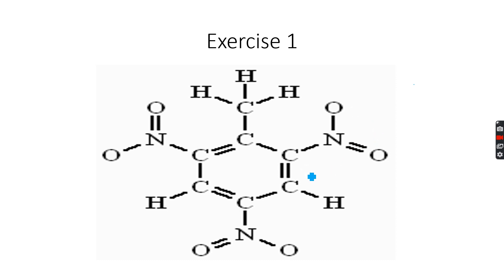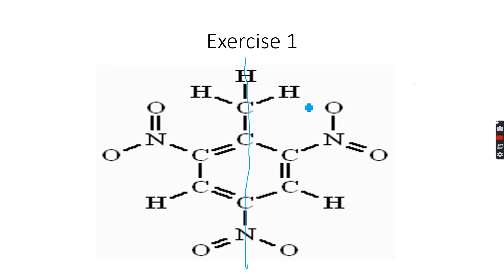Now let's do the proton NMR spectrum for this quickly. First, let's see the symmetry — I can divide it like this, and when I fold it I get symmetry because the right side completely overlaps with the left side. Now let's start counting the number of proton environments. I only see three carbon atoms with hydrogen atoms.